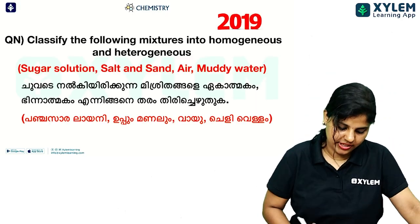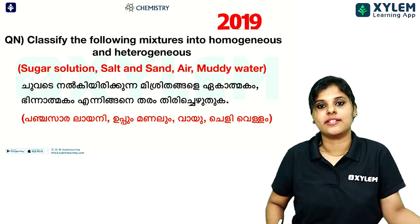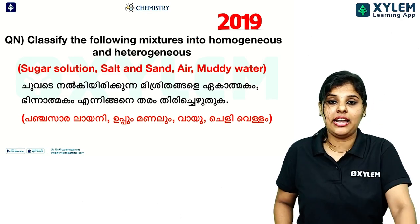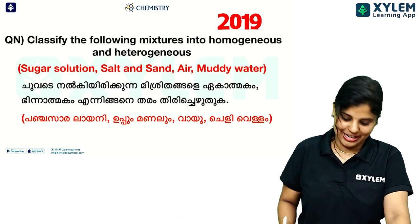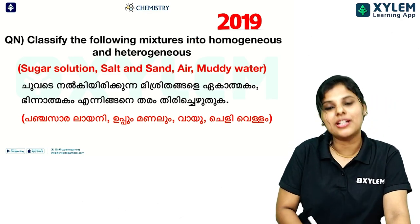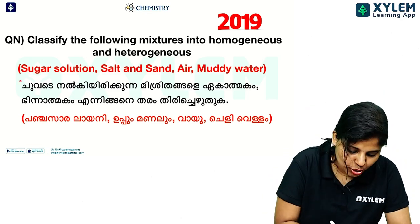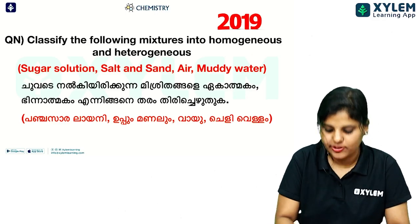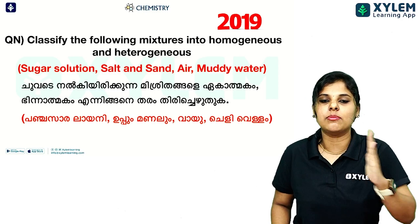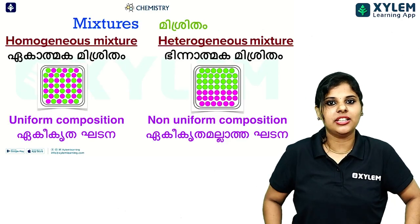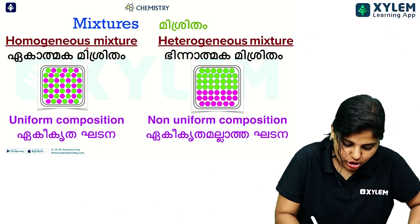Next question. Classify the following mixtures as homogeneous and heterogeneous. Homogeneous mixtures are uniform — egaatmaga mixtures. Heterogeneous mixtures are non-uniform — bhinnatmaga mixtures.